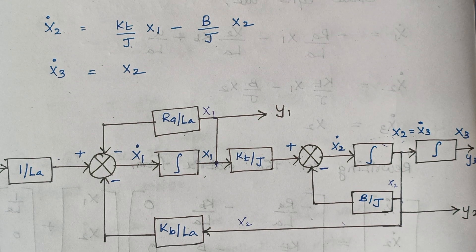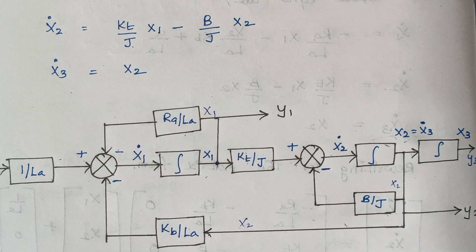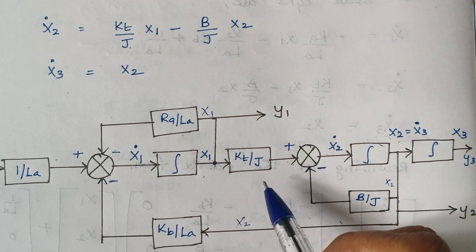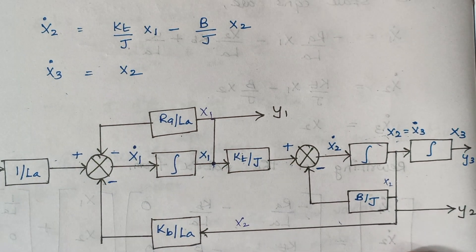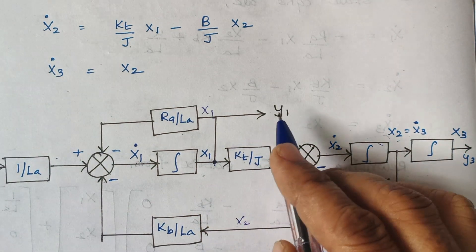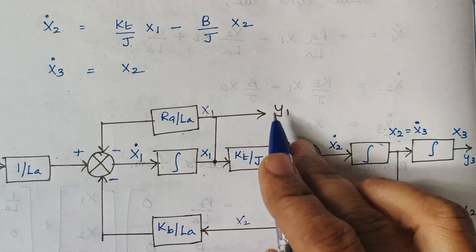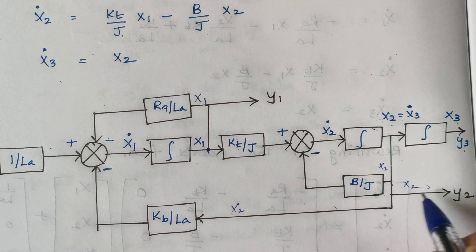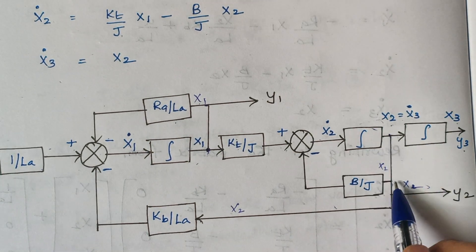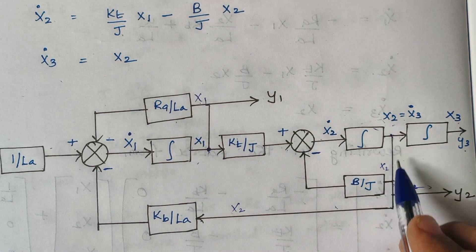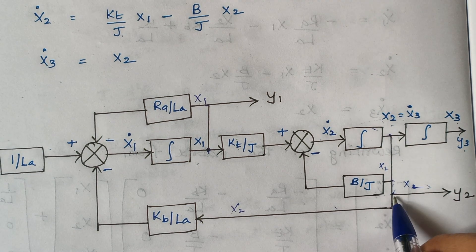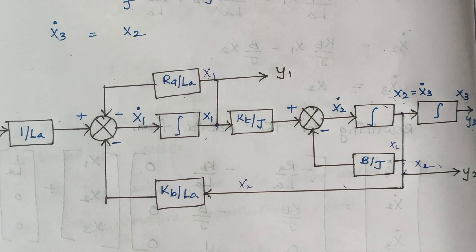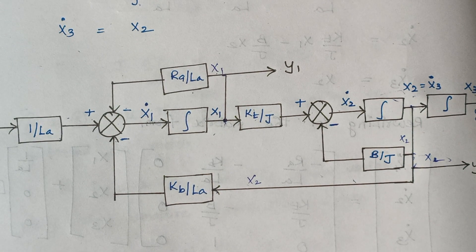Start with the summer, connect the respective inputs, and gradually proceed to build the final block diagram. We also represent the outputs: X1 is Y1, X2 is Y2, and X3 is Y3. X2 is given as input to both the B/J block and the KB/LA block, and X2 equals Y2. This concludes the derivation of the state model of the armature controlled DC motor. If you have any doubts, let me know in the comment section. Thank you.